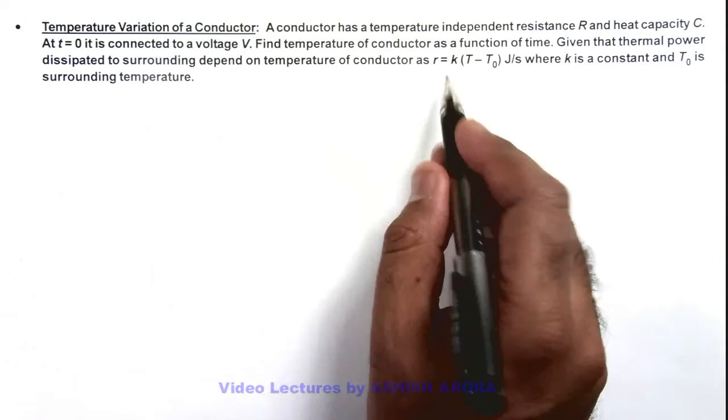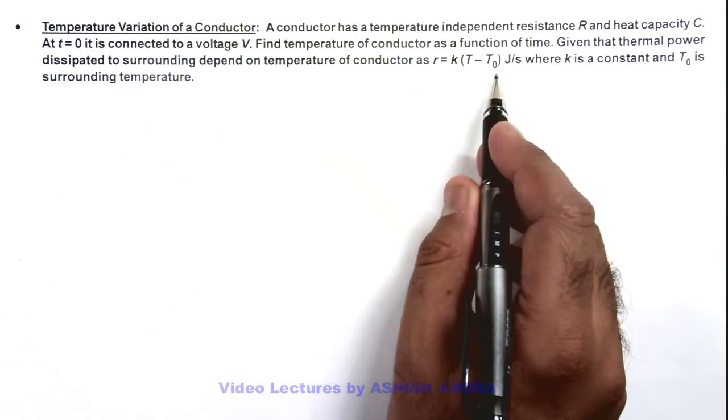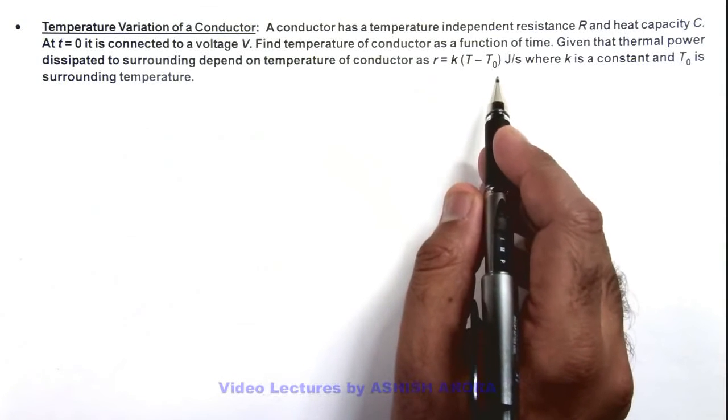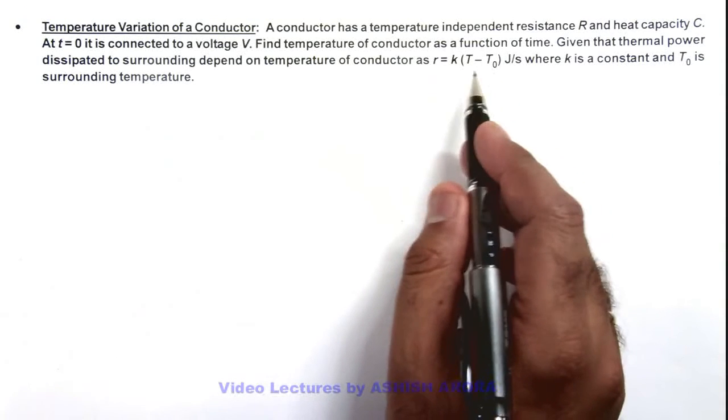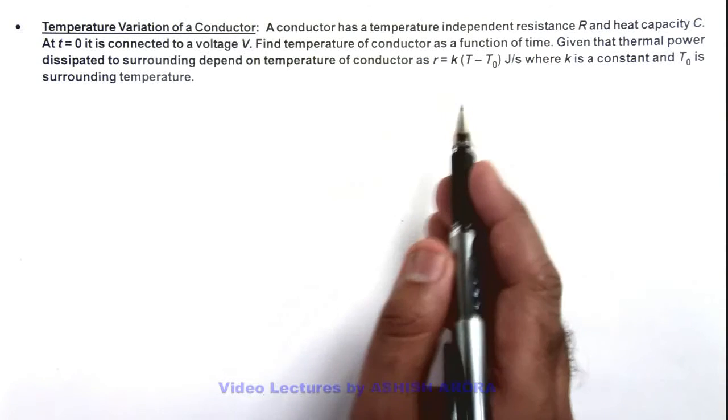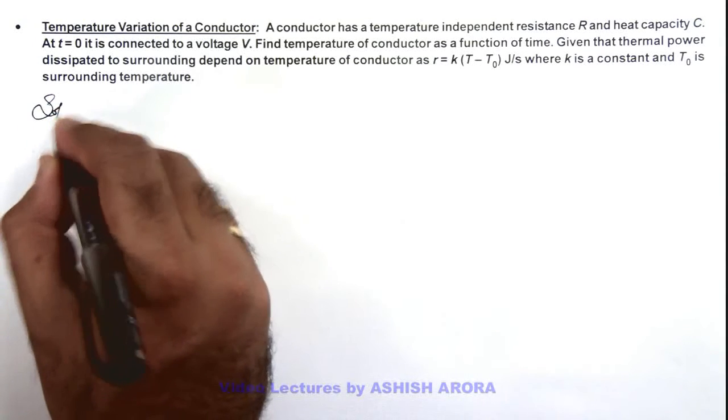Here this is the rate at which heat is being dissipated to surrounding, and we know thermal power generated in a resistance can be given as V²/R. So here we can write: